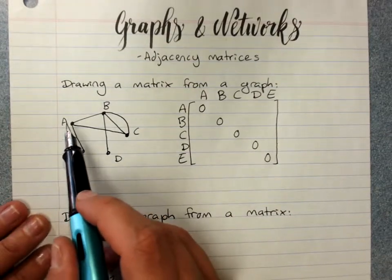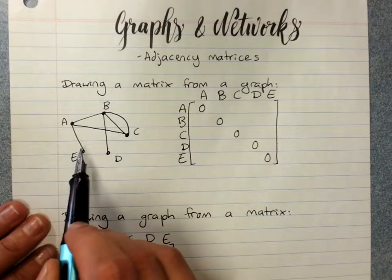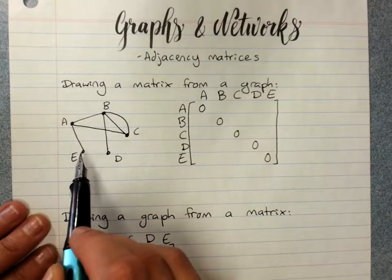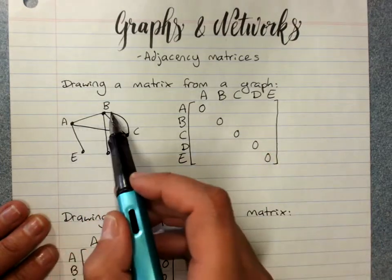Then pop in each of your connections. A goes to E once. So, oh okay, fine. Let's start with A to B. A to B once.